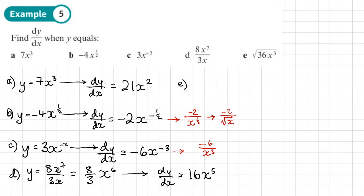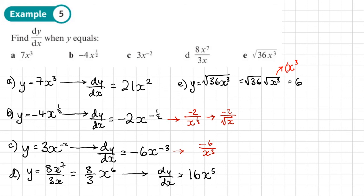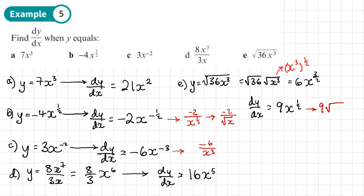Part e: y equals the square root of 36x cubed. Rewrite as square root of 36 times square root of x cubed. Square root of 36 is 6, and square root of x cubed is x cubed to the power one half, so multiply the powers to get x to the power 3 over 2. Now dy dx: multiply 6 by the power 3 over 2 to get 9, then subtract 1 from the power to get one half. So dy dx equals 9x to the power one half, or 9 times the square root of x.